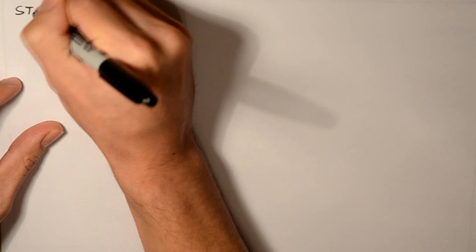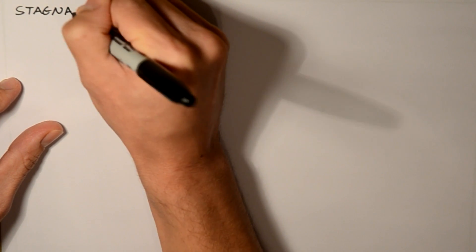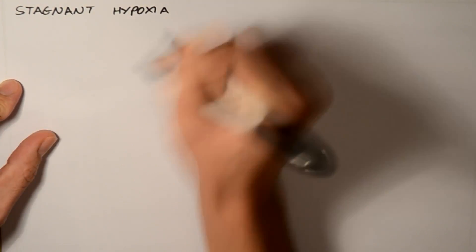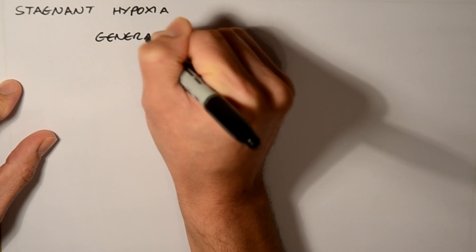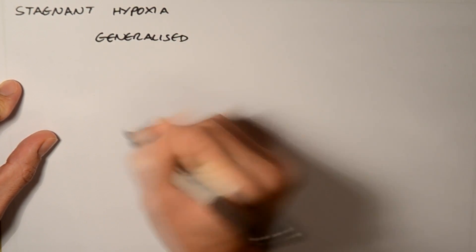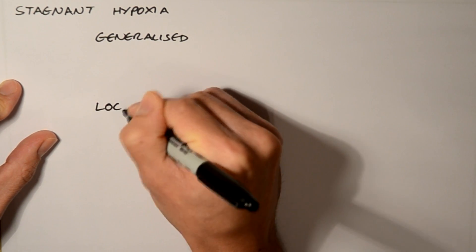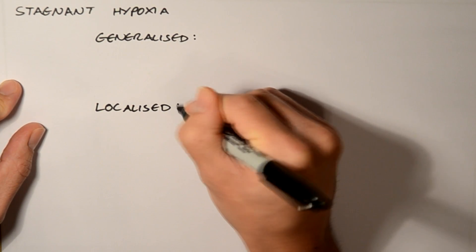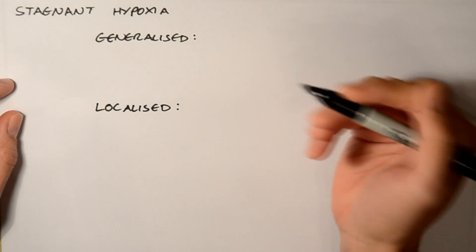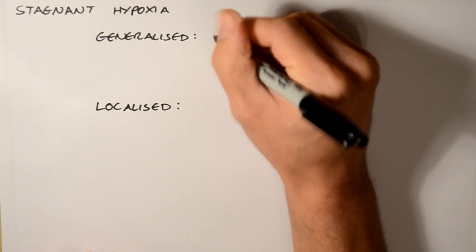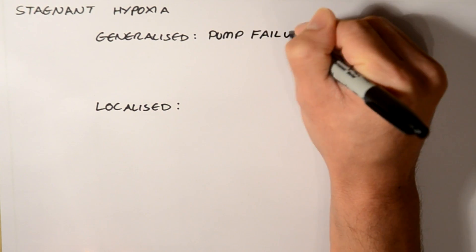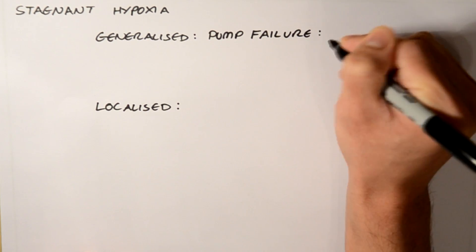Next, we have stagnant hypoxia. And it can either be generalised or localised. In generalised stagnant hypoxia, this is generally termed as pump failure.